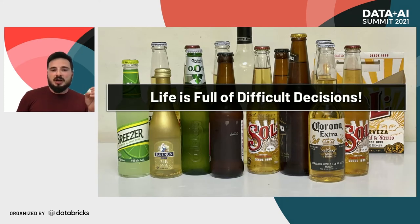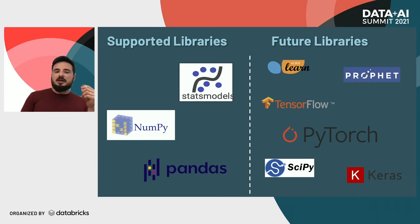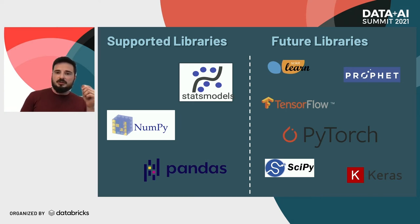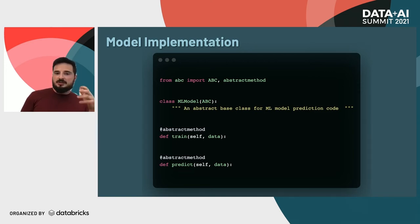Now we understand how the algorithm works, but which model should we use? There are hundreds of them and a huge variety of libraries to support. For example, we currently use the statsmodels library, but there are many more to choose from. Luckily, our infrastructure is built in a plug-and-play way — all we need is to import the needed library, extend a basic abstract class, and implement a few simple methods. The time to production is super fast.